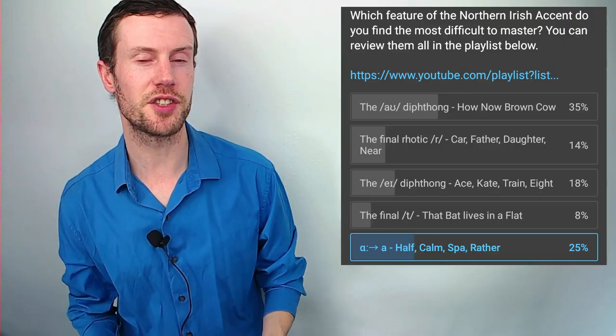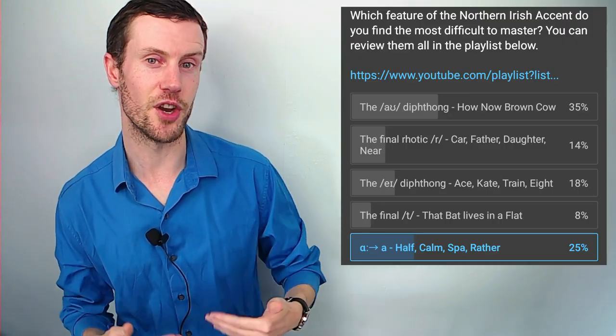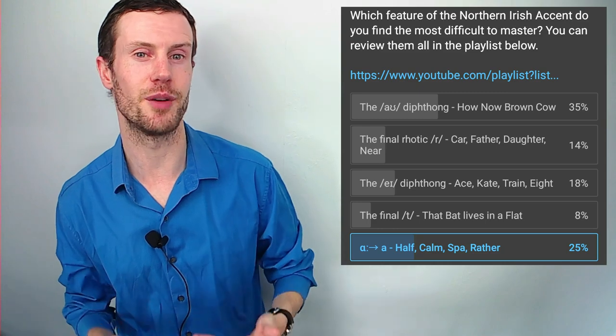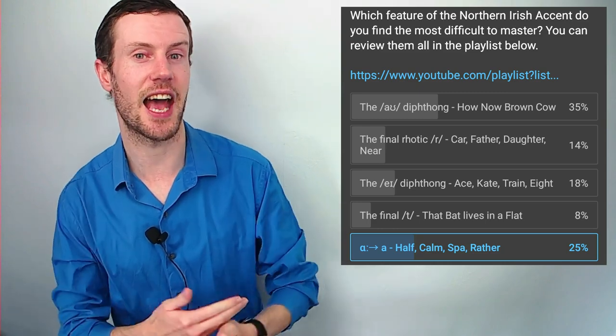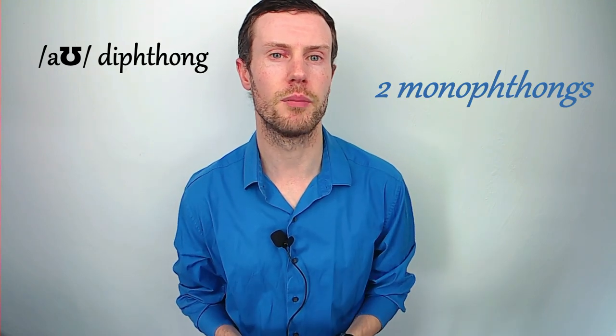How to produce and pronounce the Ao diphthong in the Northern Irish accent is regarded by most as the trickiest aspect of this dialect. In British English, the Ao diphthong is composed of two monophthongs.